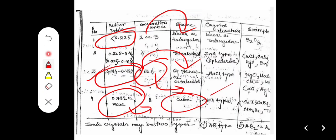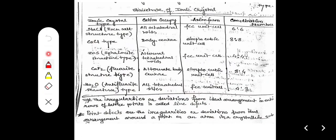Ionic crystals are basically of two types: AB type and AB2 or A2B type. For the NaCl rock salt structure, cations occupy all octahedral voids and anions occupy the FCC unit cell; coordination number is 6:6. For caesium chloride structure, the cation occupies the body center and the anion occupies the simple cubic unit cell; coordination number is 8:8.